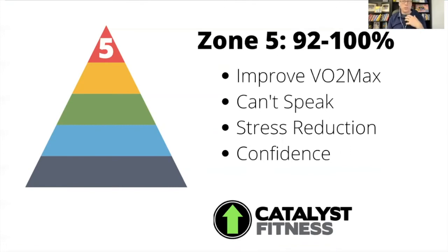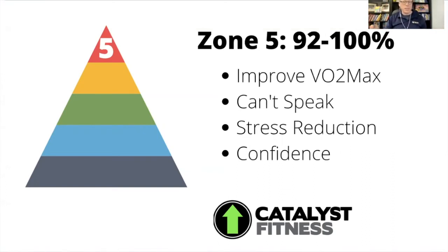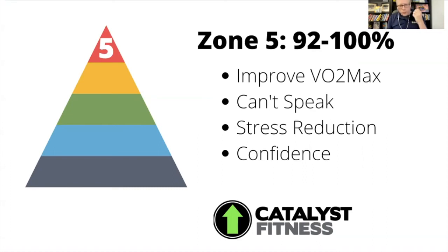Zone five is all out. You're improving your VO2 max — how much oxygen you can take up and metabolize in a very short period of time. You can't talk, you won't hold this for longer than 30 seconds, but it's awesome for stress reduction because it's so hard you can't focus on anything else. You're probably in zone five because you're racing a buddy, going for the leaderboard, or setting a personal best. It's also great for confidence — you learn that you can do hard things.